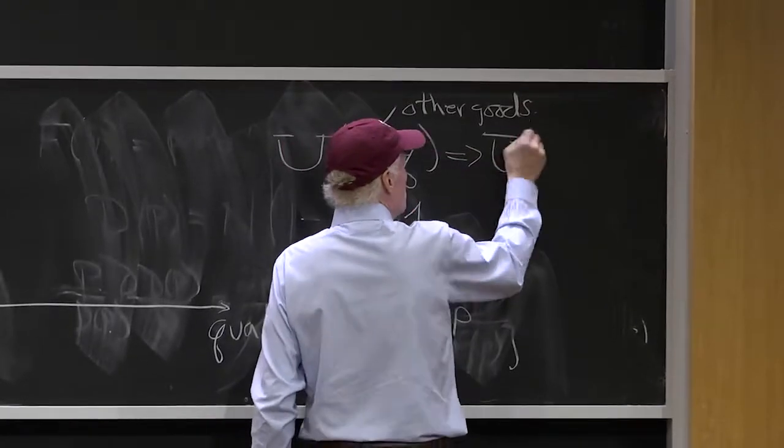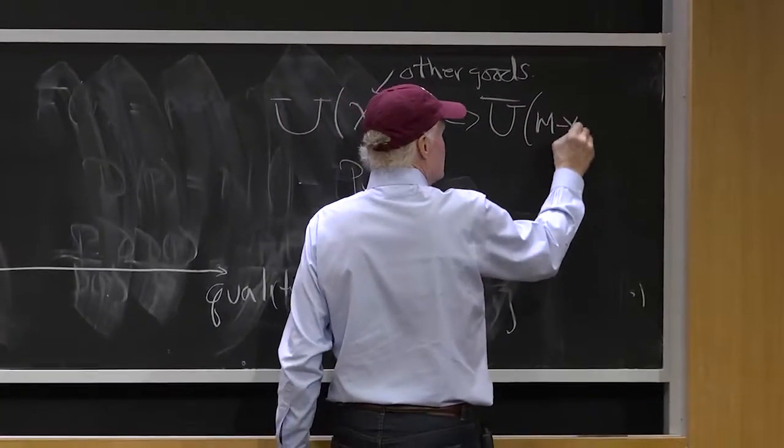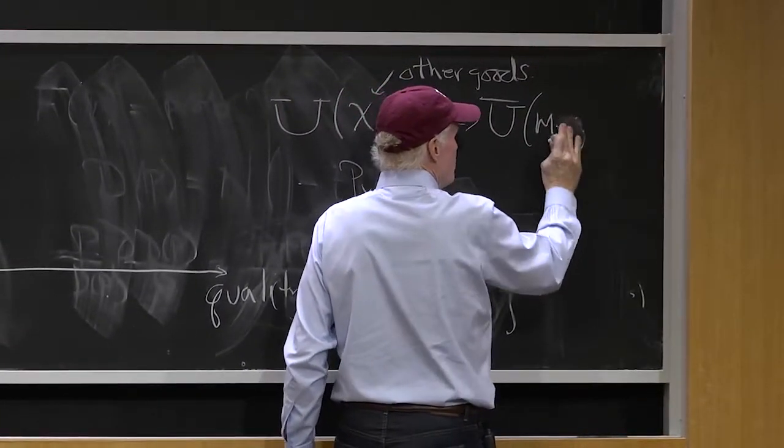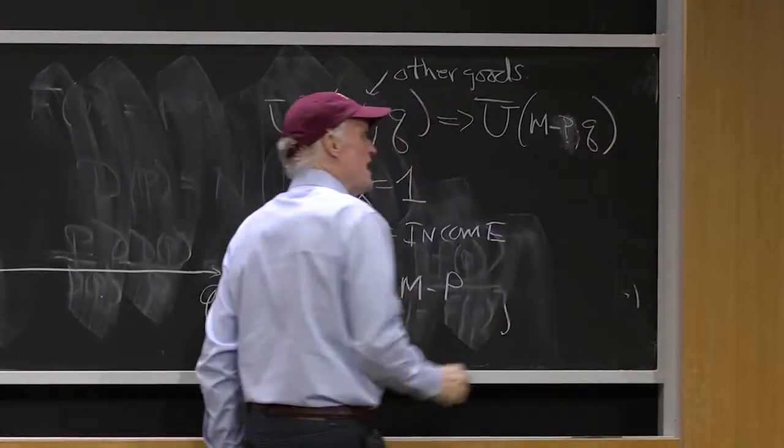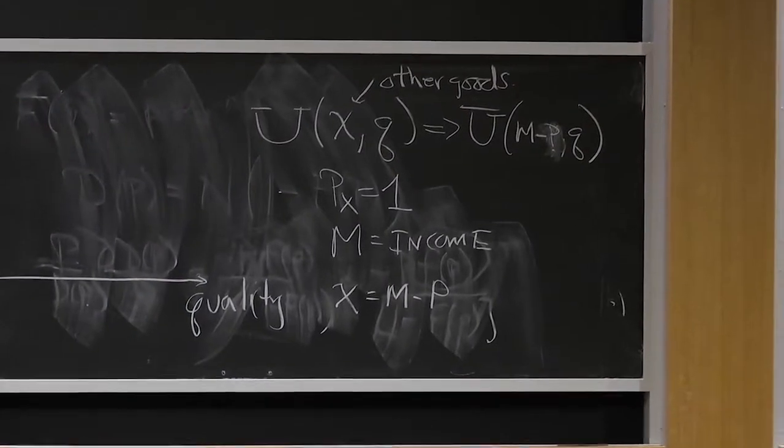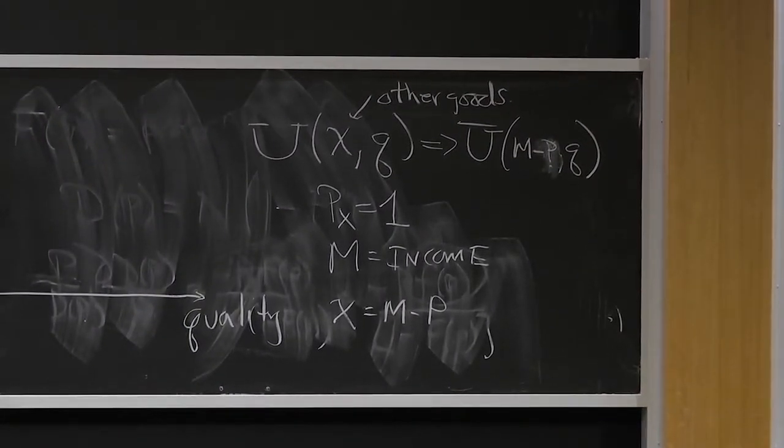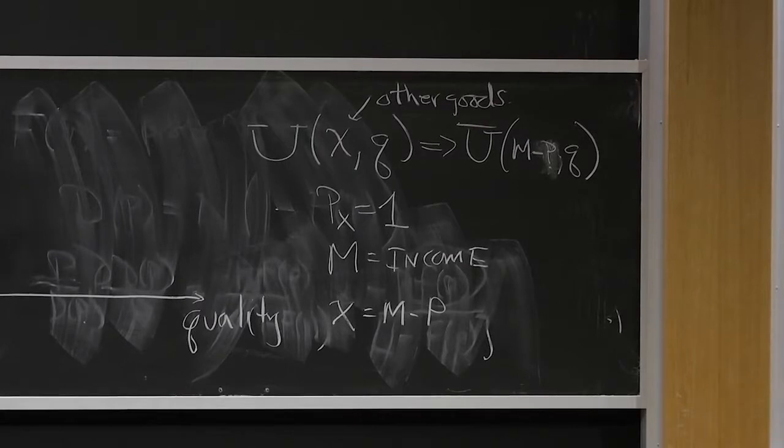So x is equal to u of m minus x. I'm going to say m minus p and q. And so that would be my utility function over p and q. And that's going to have some corresponding indifference curves.